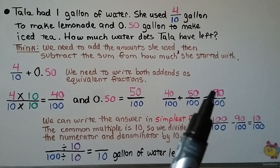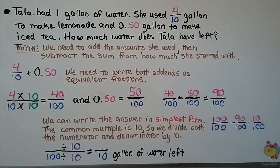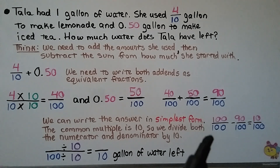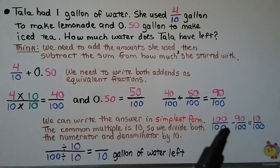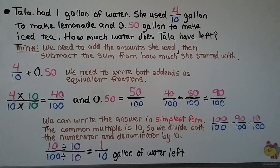That's how much she used altogether to make lemonade and iced tea. The question asks how much water she has left, not how much she used. So we do 100 hundredths for all of her water minus 90 hundredths, which equals 10 hundredths. We can write the answer in simplest form: the common factor is 10, so we divide both numerator and denominator by 10. 10 divided by 10 is 1, and 100 divided by 10 is 10. That's 1 tenth gallon of water left.